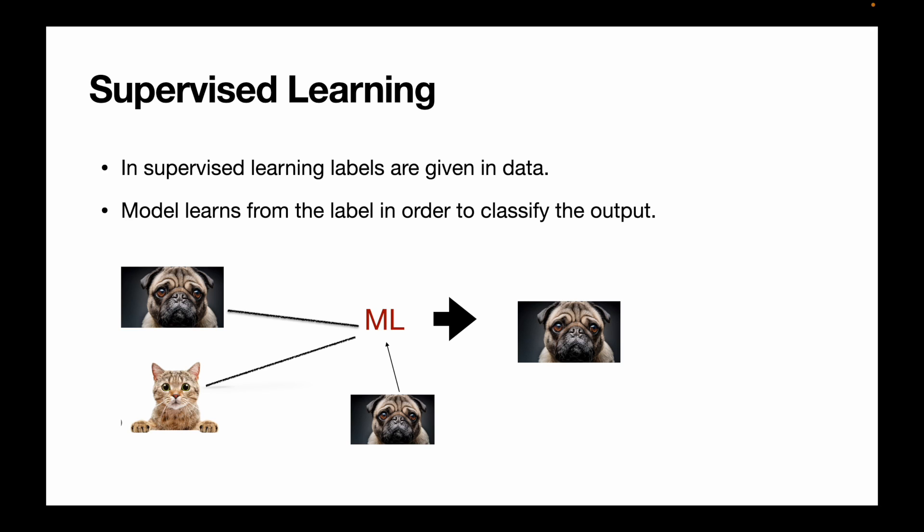In supervised learning, labels are given in the data. Think of it like teaching a small baby to identify objects — you say 'this is a ball, this is a bed' — and the baby learns with the help of the labels or names you are teaching them. Similarly, the model learns from the labels in order to classify the output. The model takes the data, uses it as a guide, learns from it, and tries to predict.